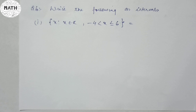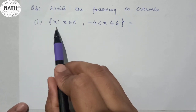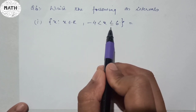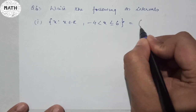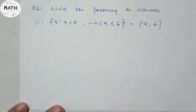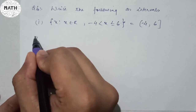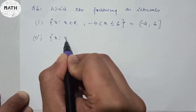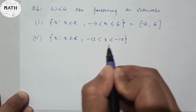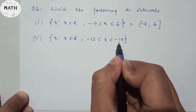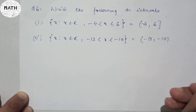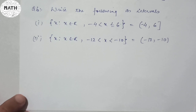Let's do question number six: write the following as intervals. The first one: X belongs to R, minus four less than X less than or equal to six. There is an equal-to sign on the right side, so it will be a round bracket for minus four and a square bracket for six: (−4, 6]. For number two: X belongs to R, minus twelve less than X less than minus ten. Both have no equal-to sign, so it will be round brackets: (−12, −10).